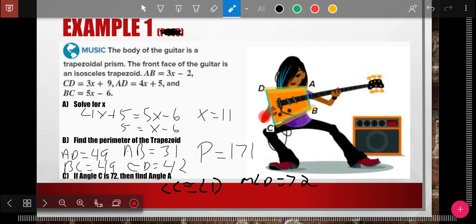And I know because of parallel, because if it's a trapezoid, then these two sides are parallel. The bases are parallel. I know A plus D should equal 180. And so the measure of angle A is 180 minus 72 or 108 degrees.